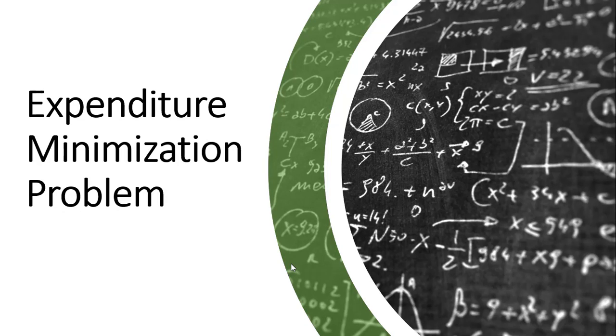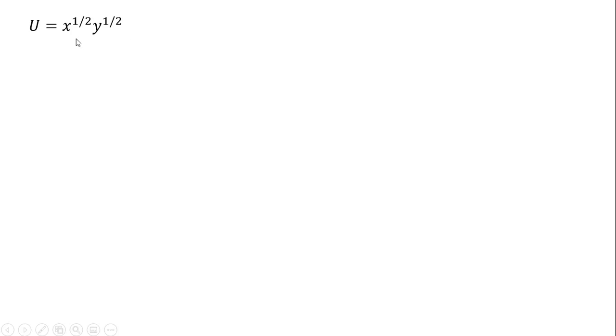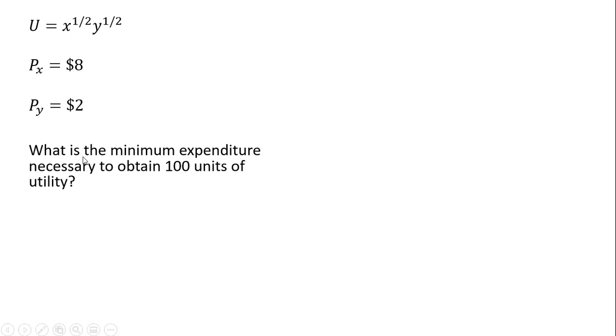In this video, we're going to do an expenditure minimization problem. So here's the consumer's utility function, and we've got good x and good y. The price of good x is $8, the price of good y is $2, and we want to find the minimum expenditure necessary to obtain 100 units of utility.